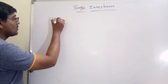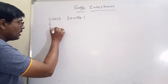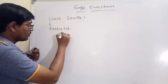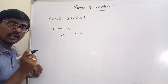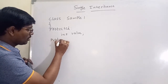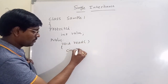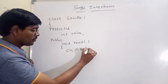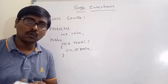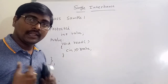Now consider an example. We define class sample1. Up to now we have used private and public, but here we use one variable as protected: protected int value. Then we add a public member function: public void read(), which uses cin to read the value. So in the class I am using one data member and one member function — variable value and the member function read.